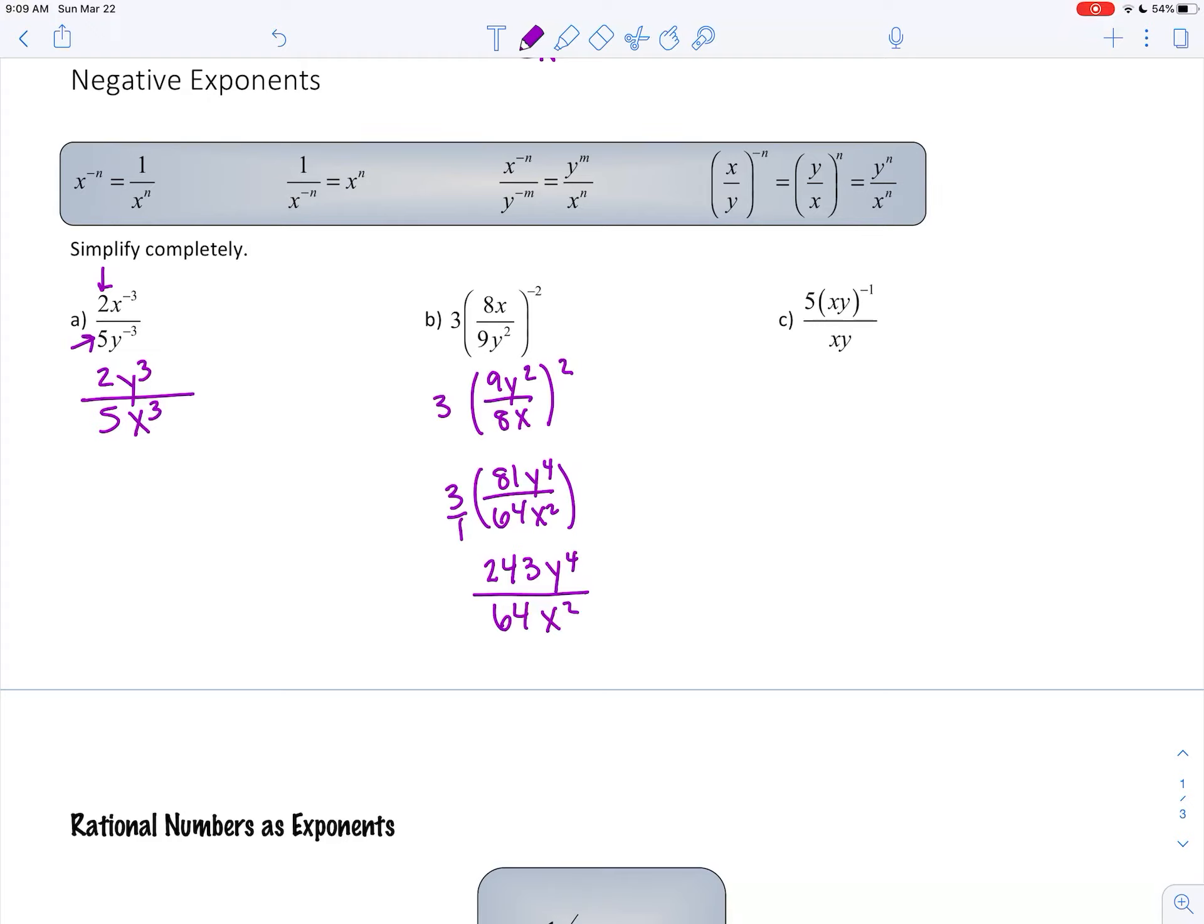Last one. Once again, the 5 does not have an exponent. There's no reason for the 5 to move. This x, y in the bottom, same thing. This is a negative 1, so I can move it down to make it a positive 1. And then in the denominator, I'm seeing x, y times x, y. We can add those exponents together, x squared, y squared.